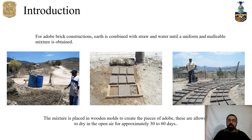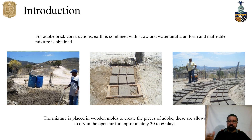Adobe housing is a traditional type of construction in many developing countries. The materials used in adobe houses are soil, straw, and water for the walls, and some wood is required for the roof system. All these items found in the local environment make construction accessible. In Mexico, the soil is excavated from an area near the construction site, so the cost for moving adobe bricks is not expensive.